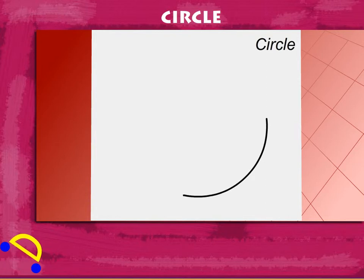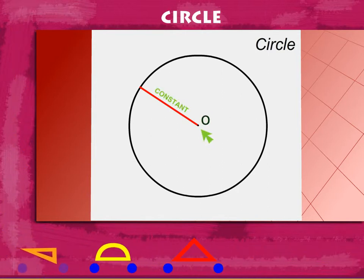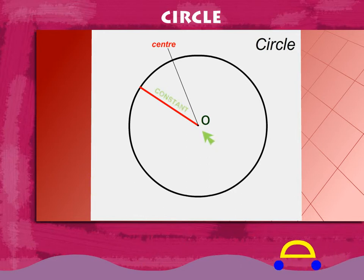By definition, a circle is a plane figure contained by a curved line traced out by a point which moves so that its distance from a certain fixed point is always constant. The fixed point is called the center of the circle, and the constant distance is called the radius.